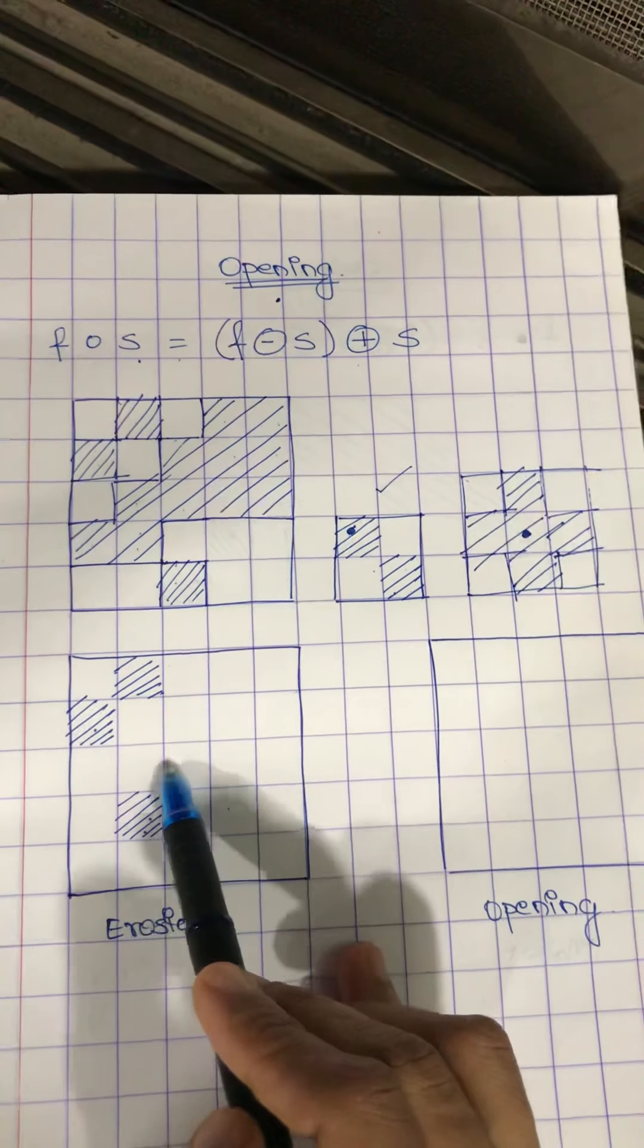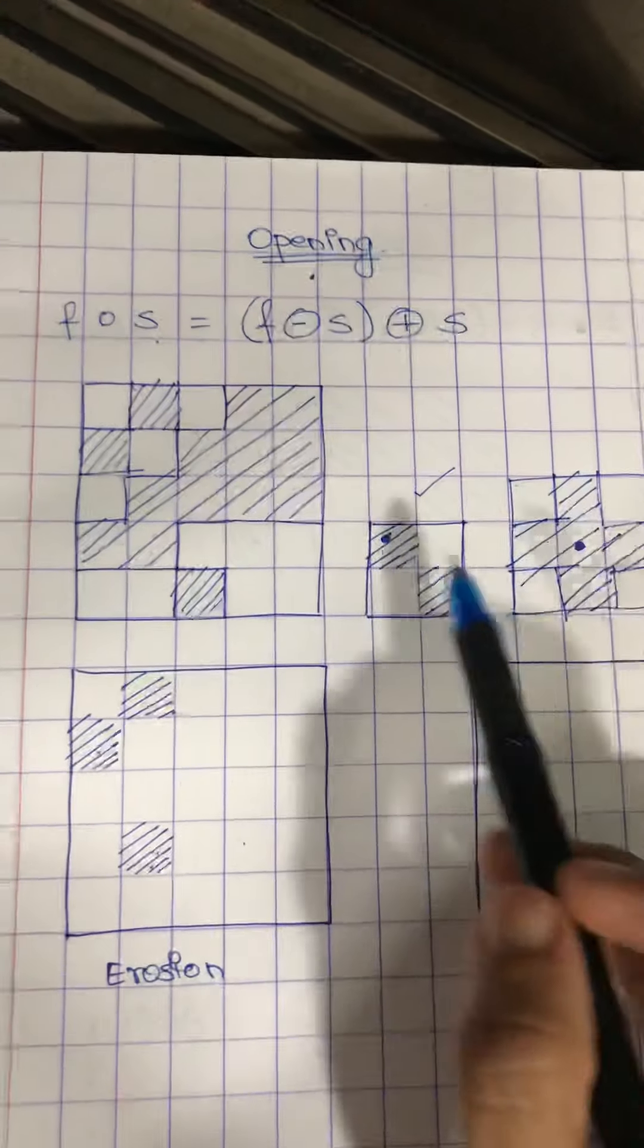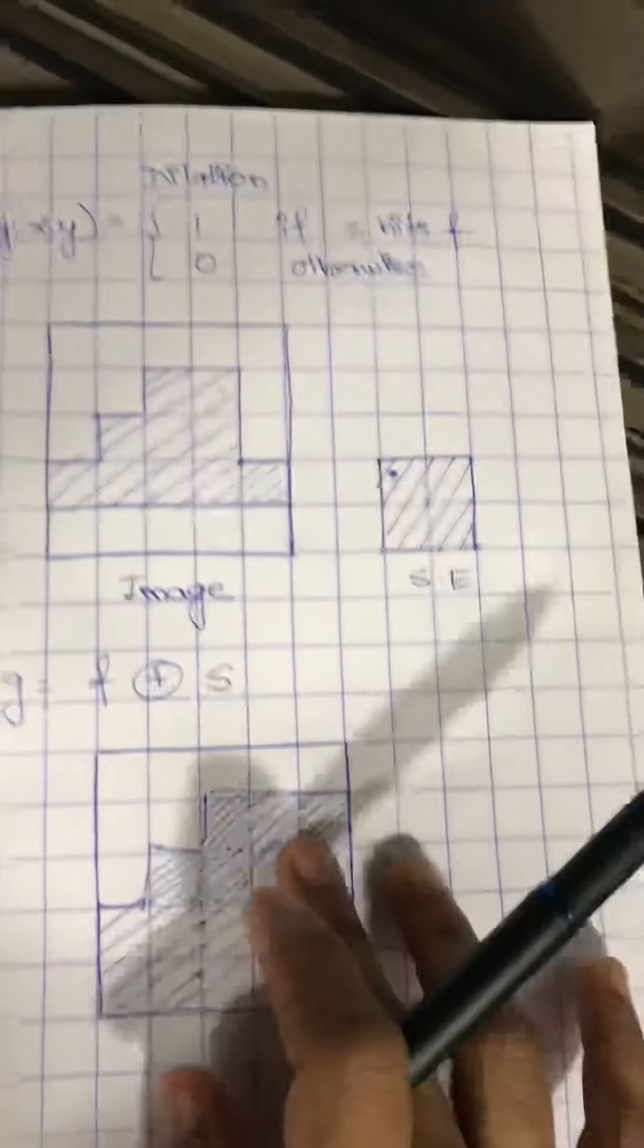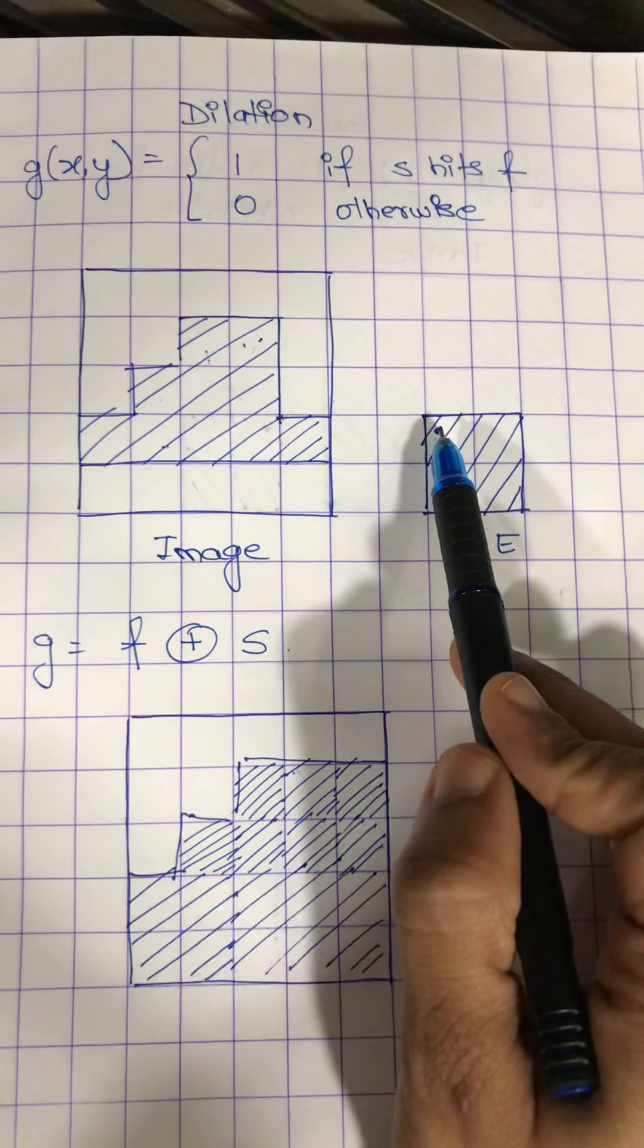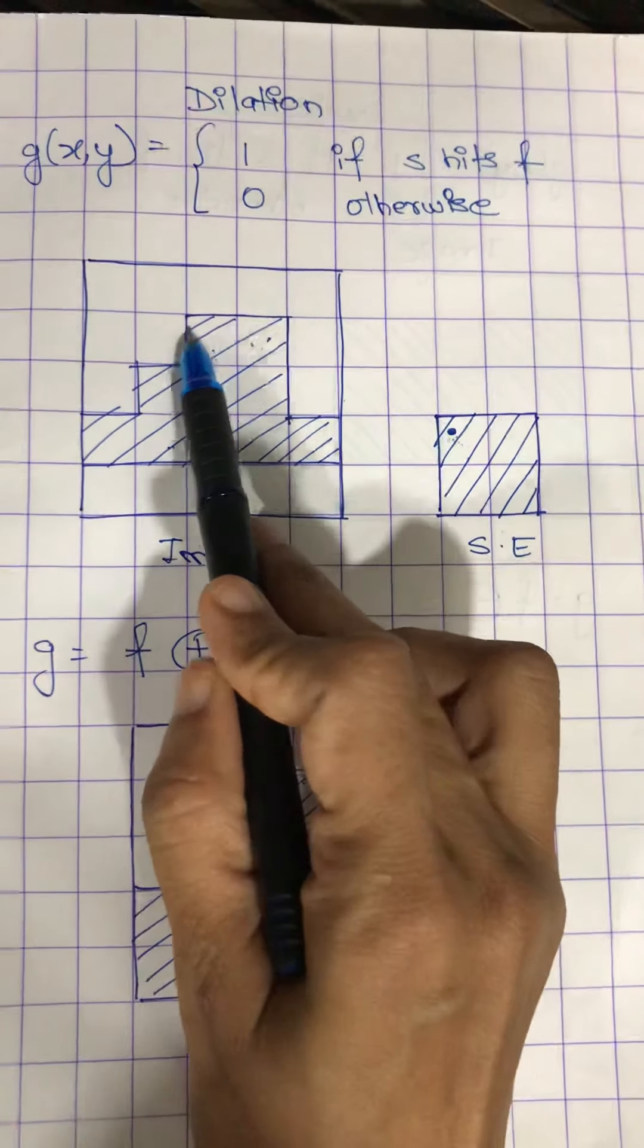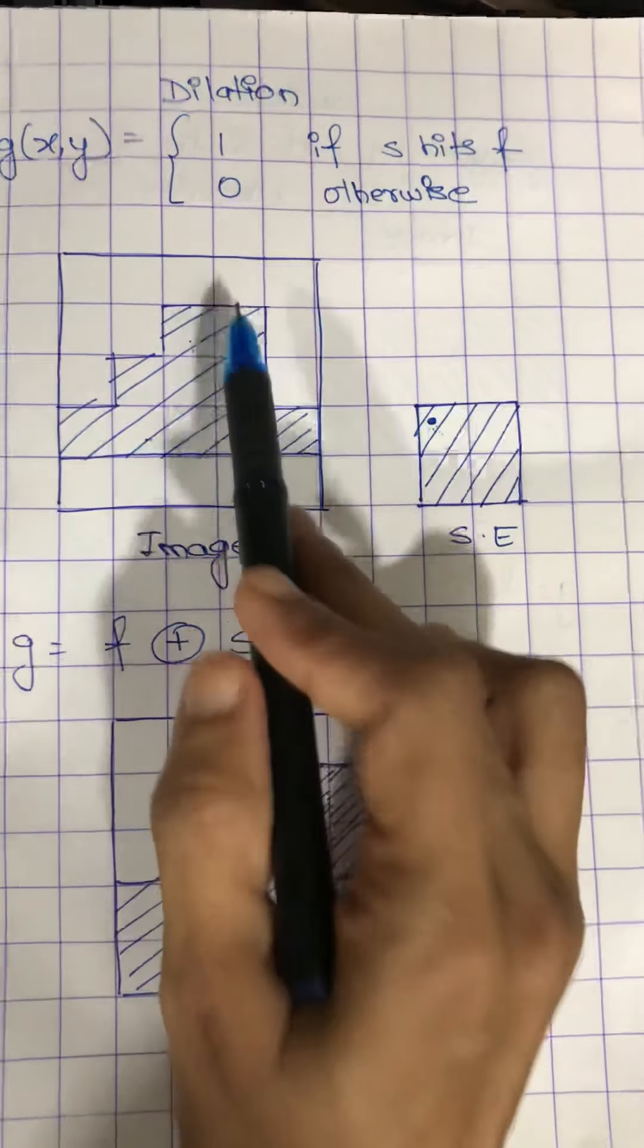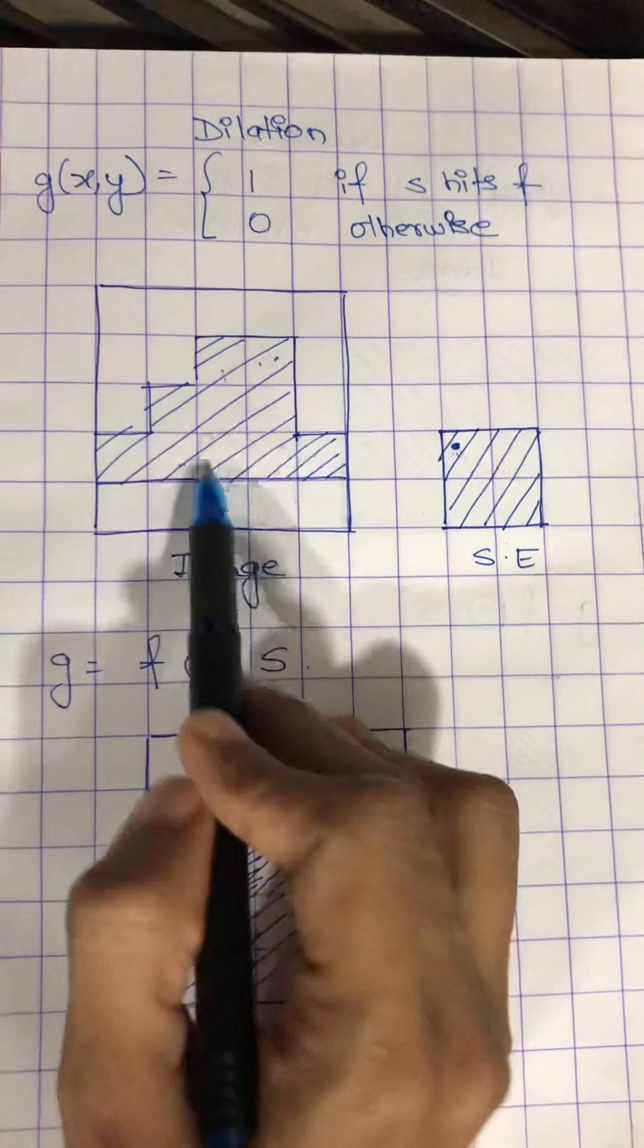So now let us assume that this is our image and this is the structuring element, and we have to perform dilation on this image. So for dilation, we will again revise what was dilation. We just have to see where this origin is going to coincide with the image pixel. Wherever it is coinciding, we have to copy or shade the entire structuring element at that place.